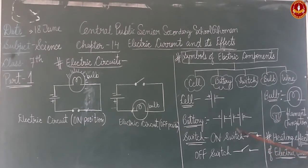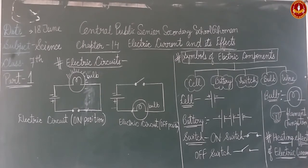First is the cell. A cell has two terminals: first is the positive terminal and second is the negative terminal. The positive terminal is denoted by a longer line, and the negative terminal is denoted by a shorter line.